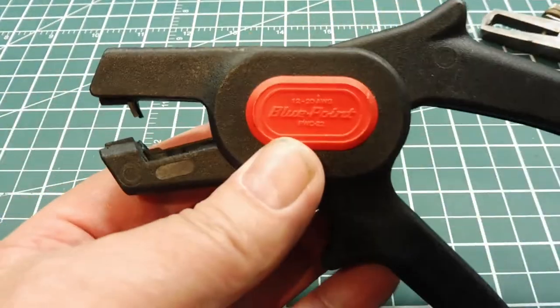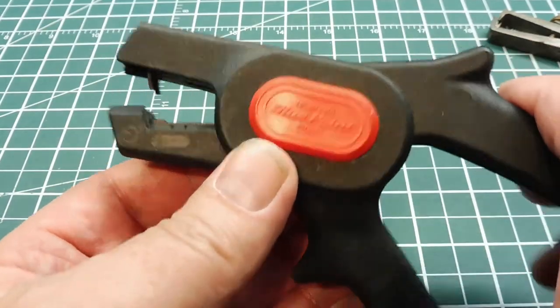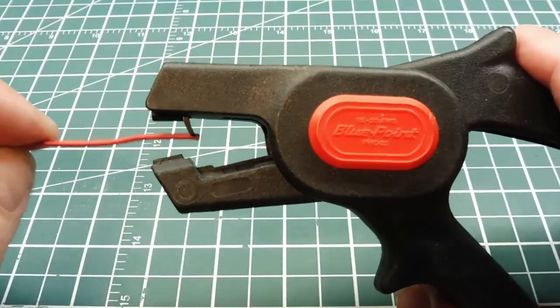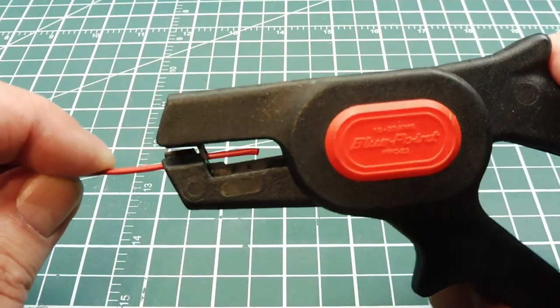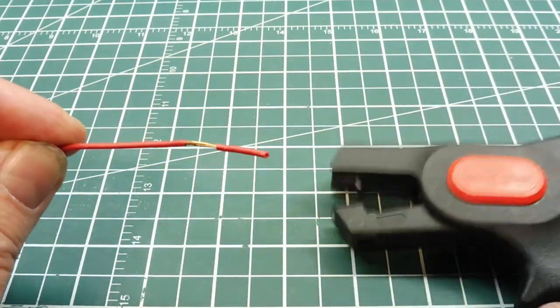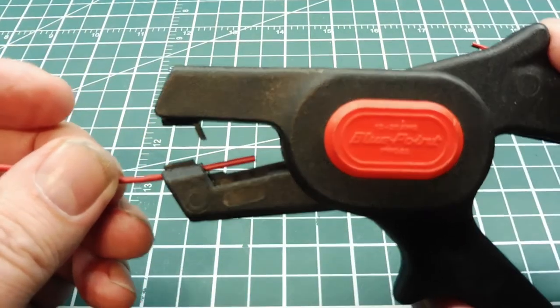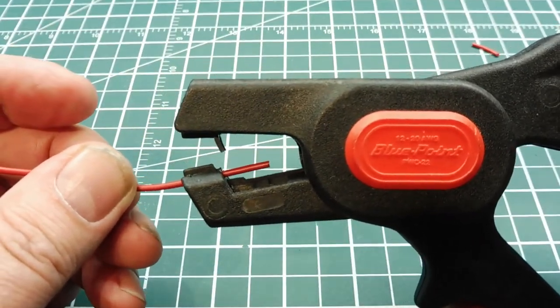There's a similar type, this one here. It's similar to the last one, but this one is self adjusting. You just apply the wire inside and press, and she'll self adjust and strip, which is handy again to get into tight places where the cable is pointing at you.